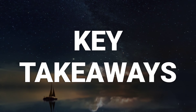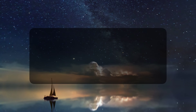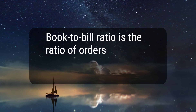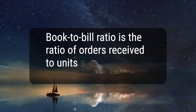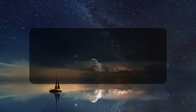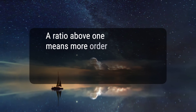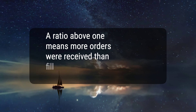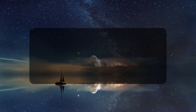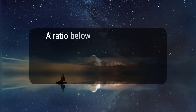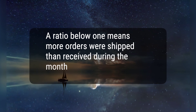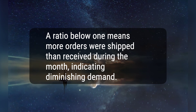Here are three key takeaways. 1. The book-to-bill ratio is the ratio of orders received to units shipped and billed for the period. 2. A ratio above 1 means more orders were received than filled, indicating strong demand. 3. A ratio below 1 means more orders were shipped than received during the month, indicating diminishing demand.